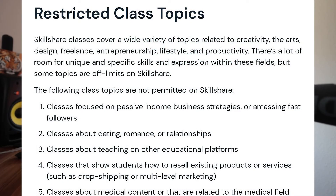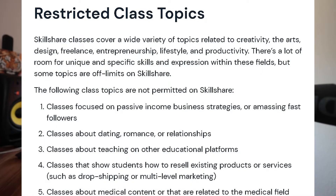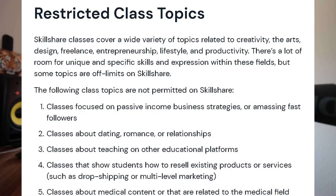Number one is classes focused on passive income business strategies or amazing fast followers — those will get a strike immediately. Number two is classes about dating, romance, and relationships. Number three is classes about teaching on another educational platform, so be careful making a class about how to use Teachable, for example — that's potentially not allowed. Three strikes and your account is done.